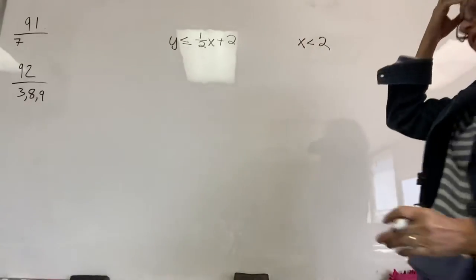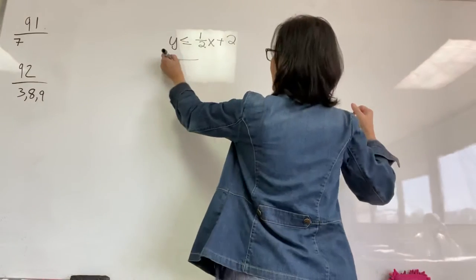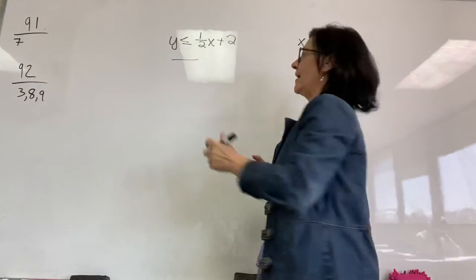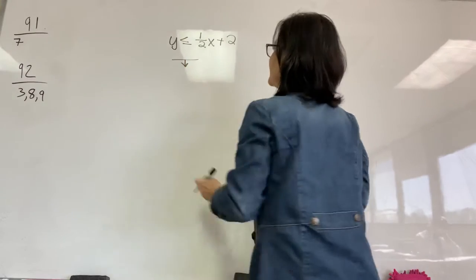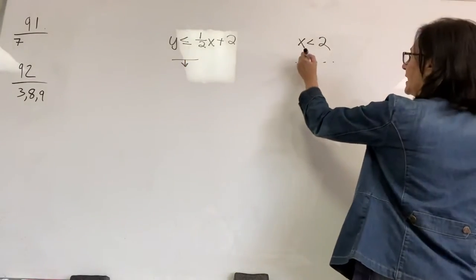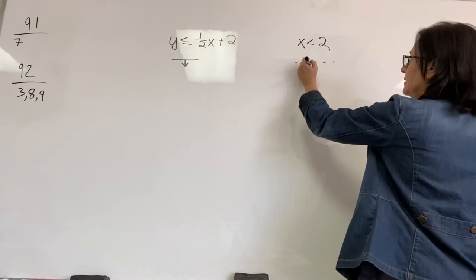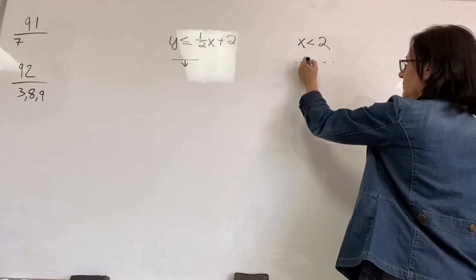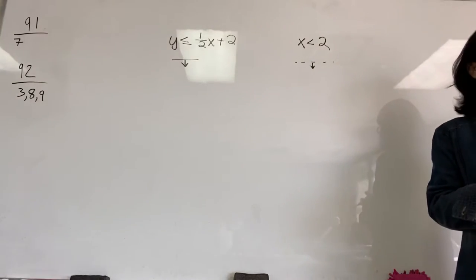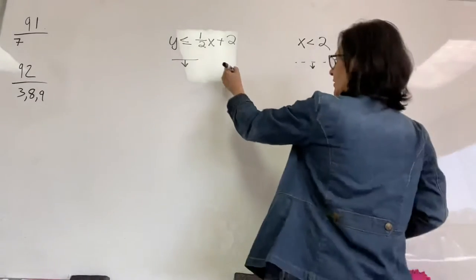Y less than or equal to 1 half X plus 2 and X less than 2. I'm going to go ahead and tell myself this is going to be a solid line, and it's down. That's right. It'll be every solution below the line because it's less than. This one's going to be a hyphenated line, and it too, this one's going to be interesting, is really to that side. All right, so I'm going to graph these.